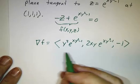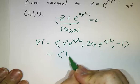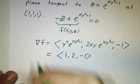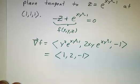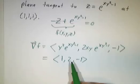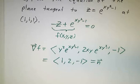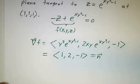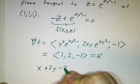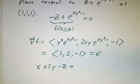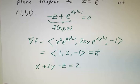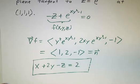Evaluating this gradient at (1, 1, 1), we get (1, 2, -1). Just like in the previous problem, this gradient is perpendicular to the level surface, so we have our normal vector — the vector normal to the plane. The equation of the plane is x + 2y - z equals some number, and we figure out that number by plugging in the point (1, 1, 1).